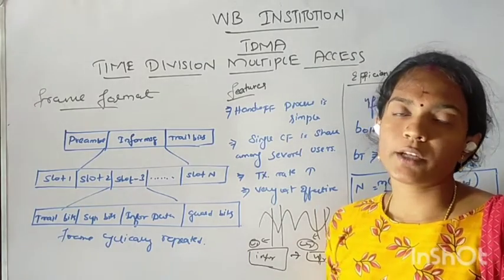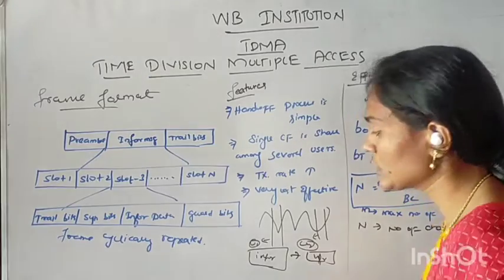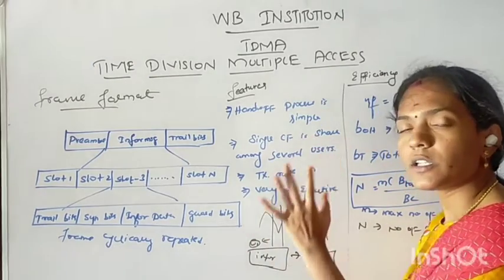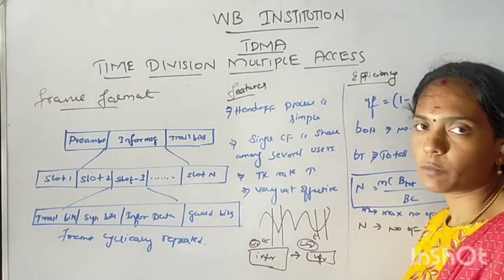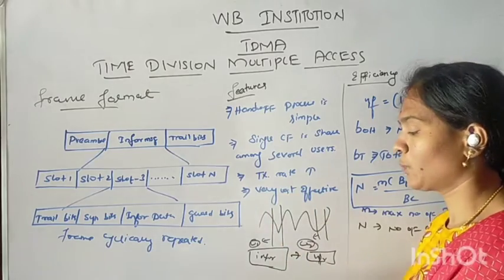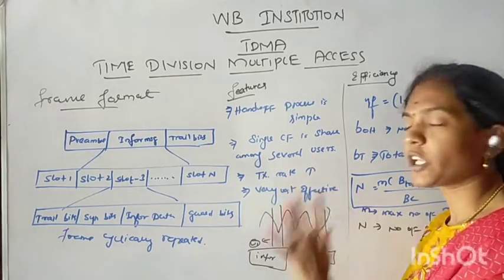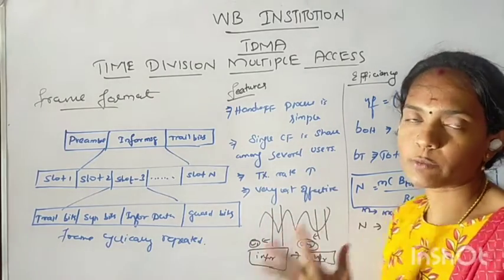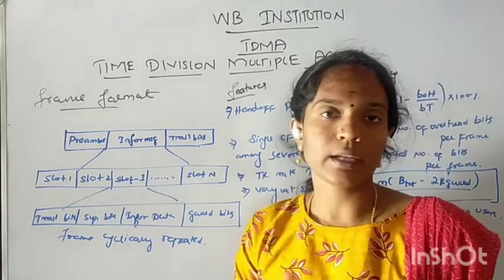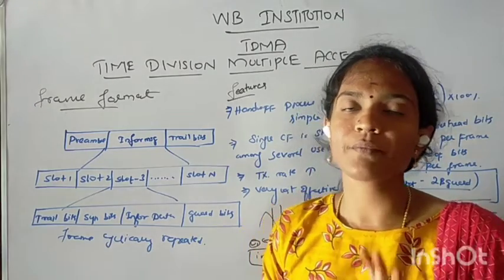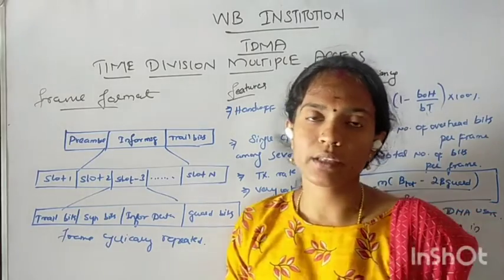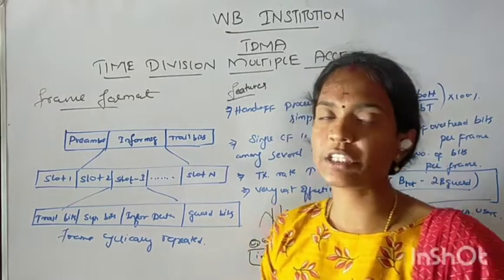That is the buffer method in the TDMA process. In the buffer method, information is stored, and communication happens in assigned slots. It is not a continuous process — transmission happens in time slots. That is TDMA, buffer method in TDMA.